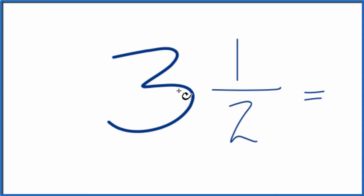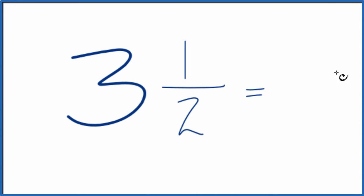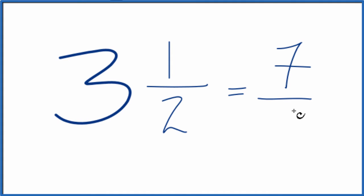And the way we do that, we take 3 times 2, that's 6, plus 1. 6 plus 1 is 7, so we have 7 over 2.